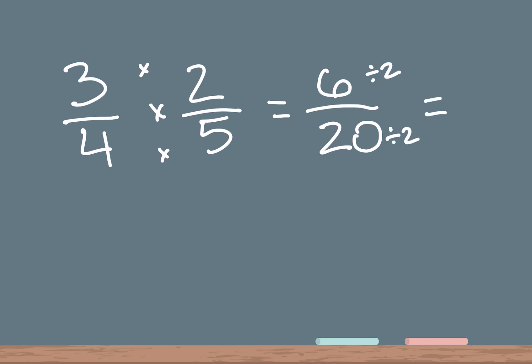So 6 divided by 2 is 3, and 20 divided by 2 is 10. So our answer to our second problem is 3 over 10.